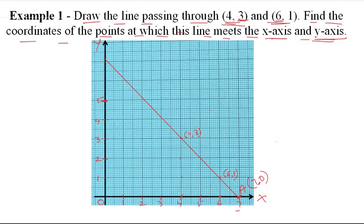Now, where does the line meet the y-axis? We locate it here — counting along to 6, 7 on the y-axis. So this point's name is B and we can write it as (0,7), because we move along the vertical line and 7 is there on the y-axis.